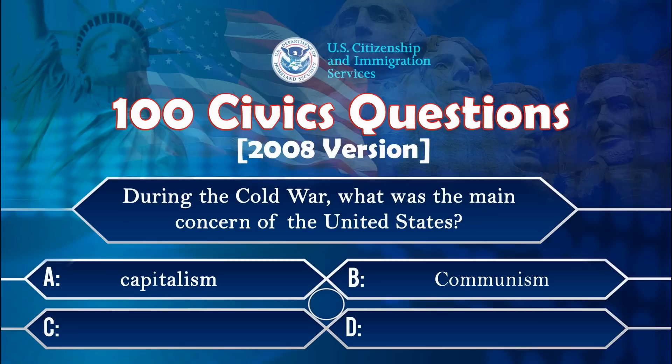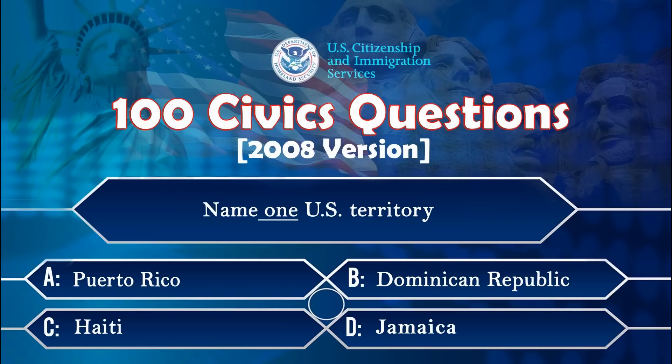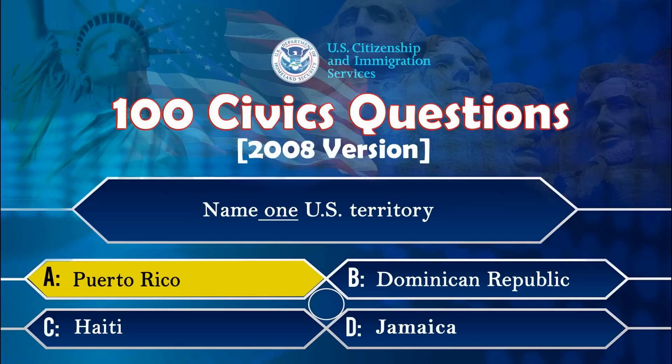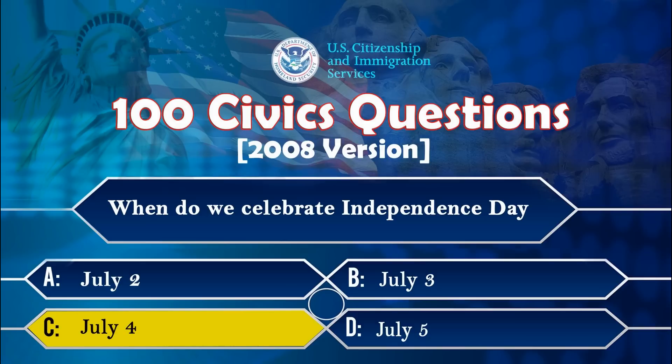During the Cold War, what was the main concern of the United States? Communism. Name one US territory. Puerto Rico. When do we celebrate Independence Day? July 4th.